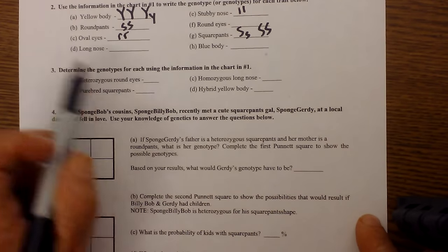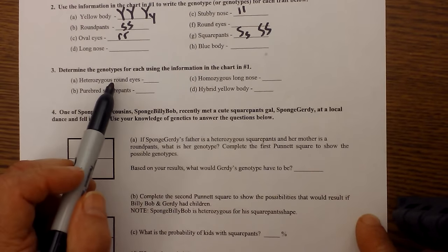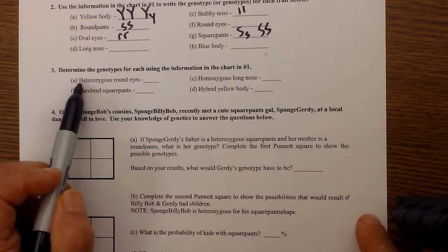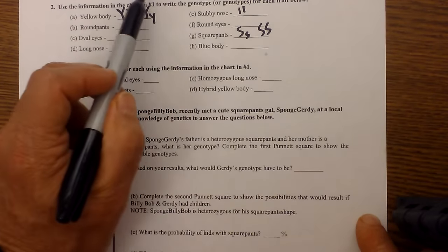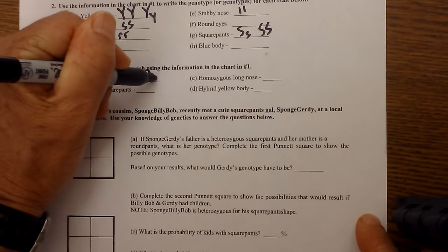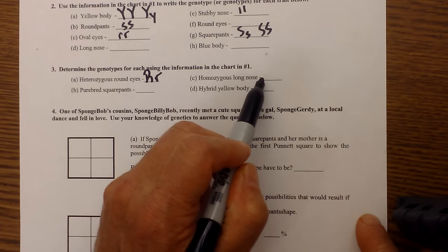heterozygous round eyes. Determine the genotype using the information in the chart. We have a heterozygous round eyes, round eyes are dominant. So that will be written big r little r and I'll do one more homozygous for the long nose.